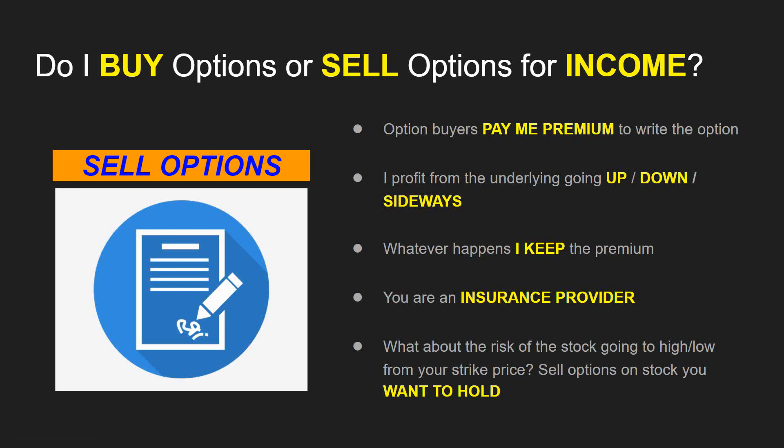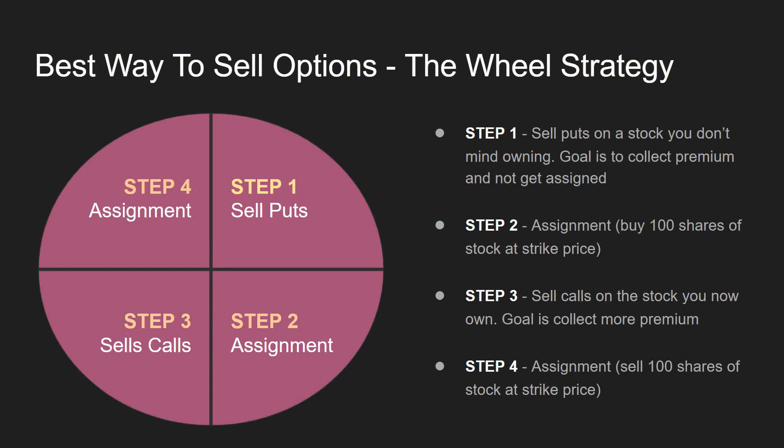I do options on stocks like NIO — I sell a lot of puts on NIO — Palantir, and Bitcoin-related stocks like Riot and Mara. These are stocks I believe will go higher long-term, so I'm willing to sell puts on them. That leads nicely into the best way to sell options, which in my personal opinion is called the wheel strategy.